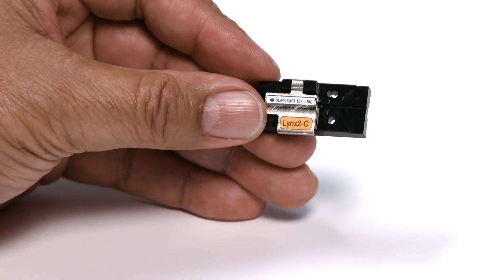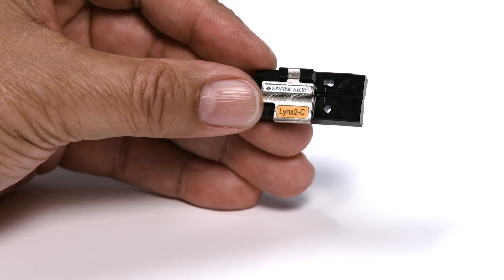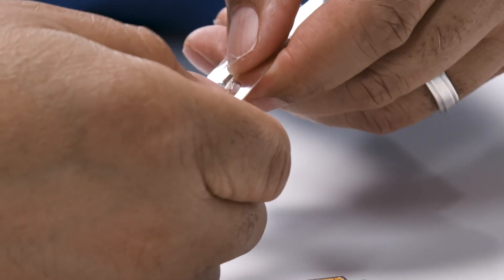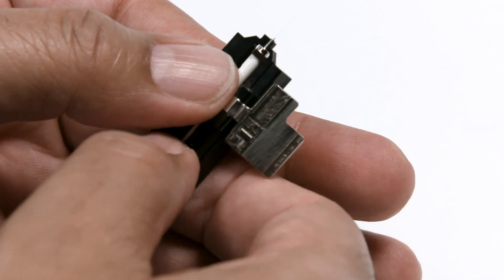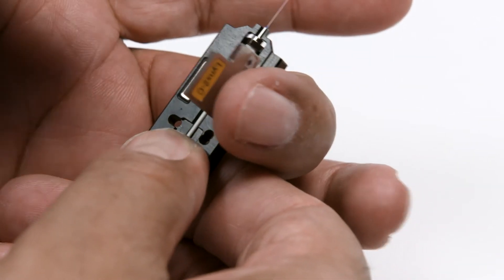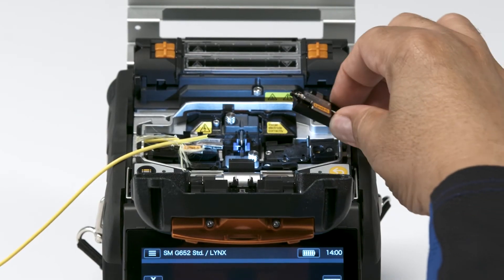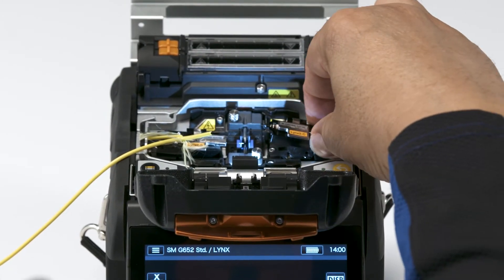Now let's prepare the ferrule holder for the right side. Open a holder. Carefully remove the ferrule from its protective packaging. Immediately place the ferrule into the ferrule holder. Place the ferrule holder with the ferrule into the splicer.